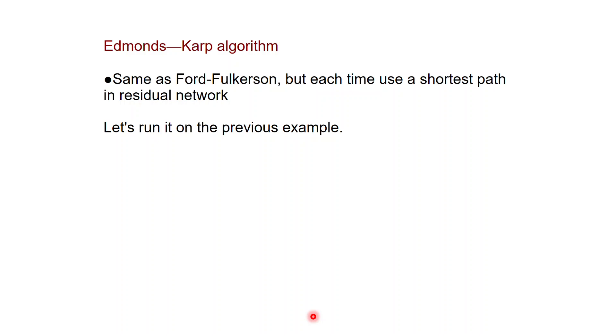Such an algorithm is known and is due to Edmonds and Karp, and it is in fact very similar to Ford-Fulkerson. The only critical difference is that each time we're going to use a shortest path in the residual network. The difference is not so much in the formulation of the algorithm, but they were able to prove that this thing actually gives you a big saving in terms of time.